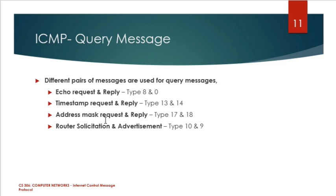The third query message is address mask request and reply. Address mask means to obtain the mask of the network and the corresponding reply. If you have any network and a router exists, the address mask request is the typical request message, and the corresponding reply is the address mask reply.